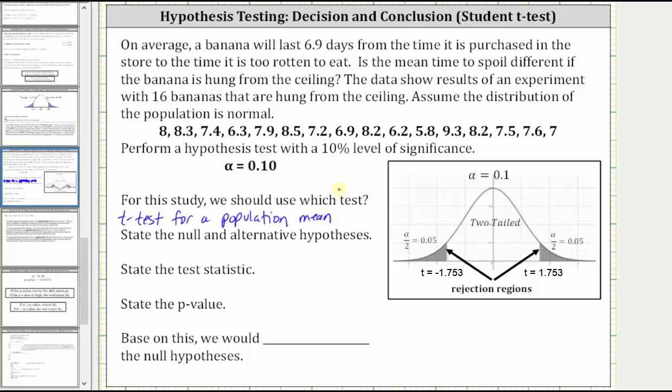Next, we're asked to state the null and alternative hypotheses. And again, we're testing to see whether the mean time to spoil is different if the banana is hung from the ceiling. The given population mean is 6.9.